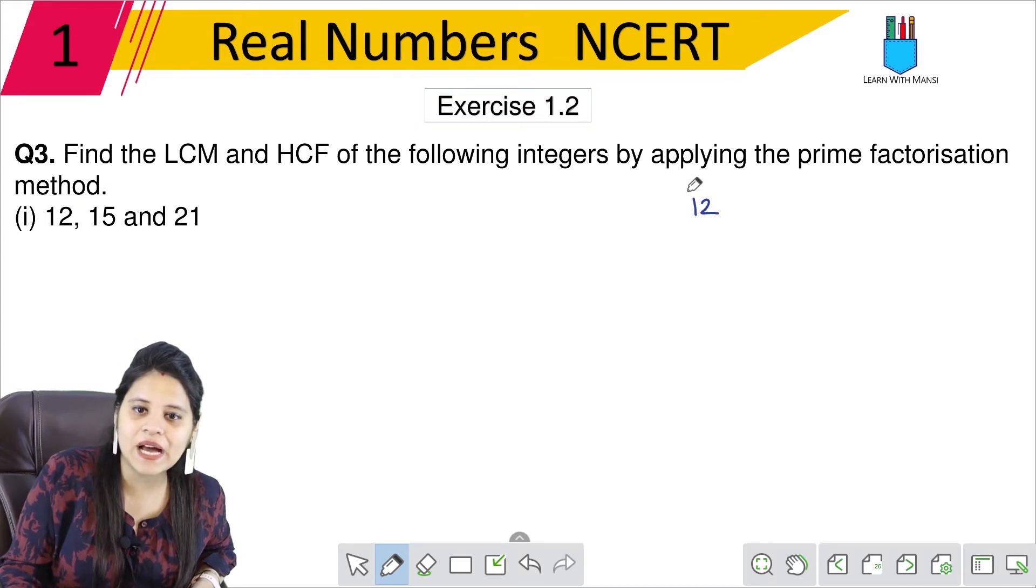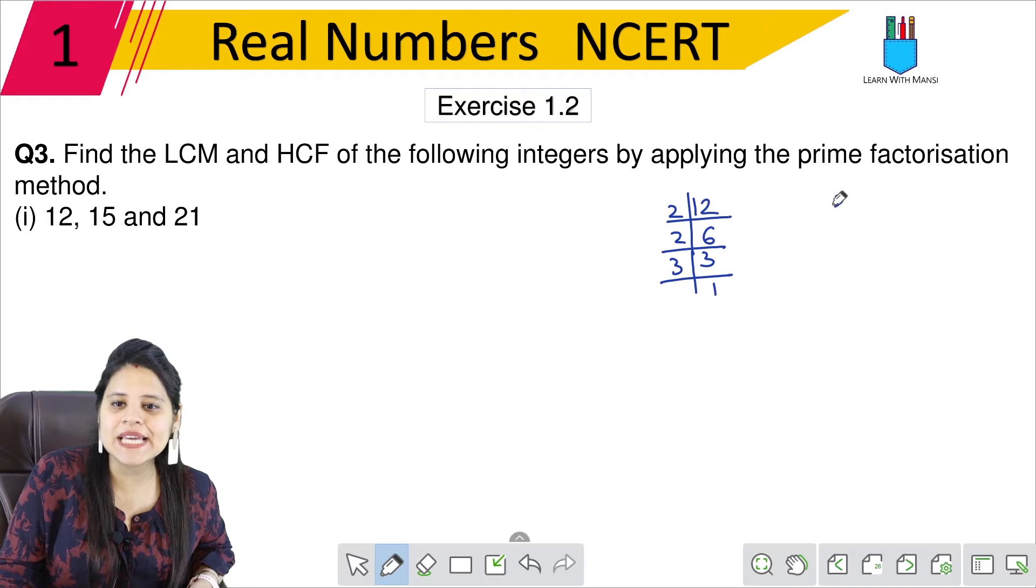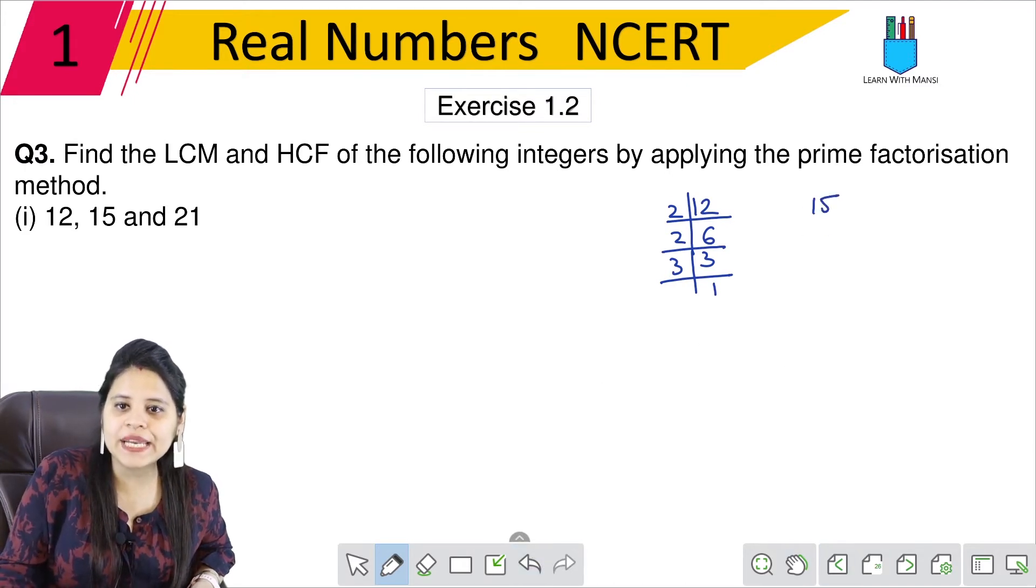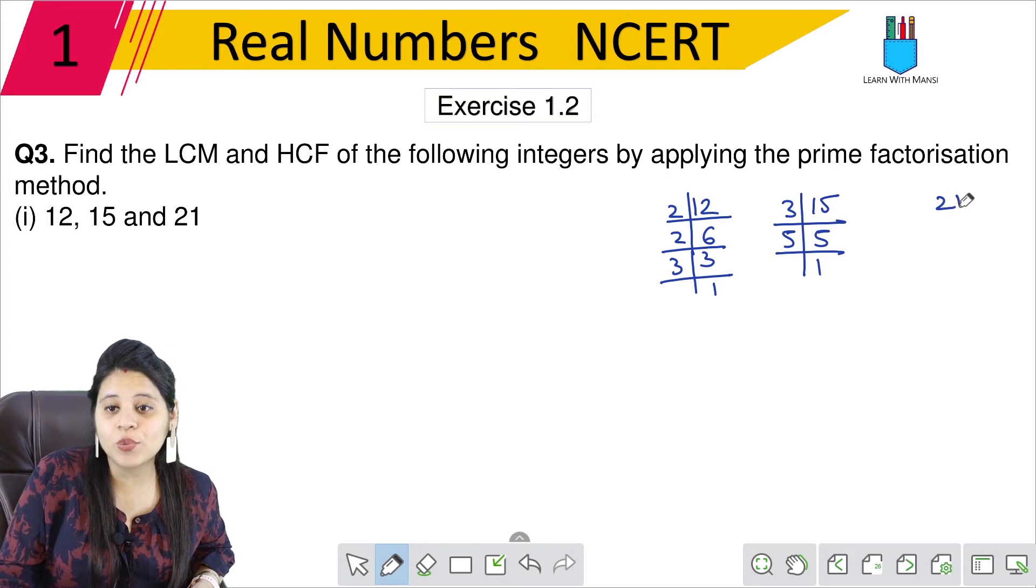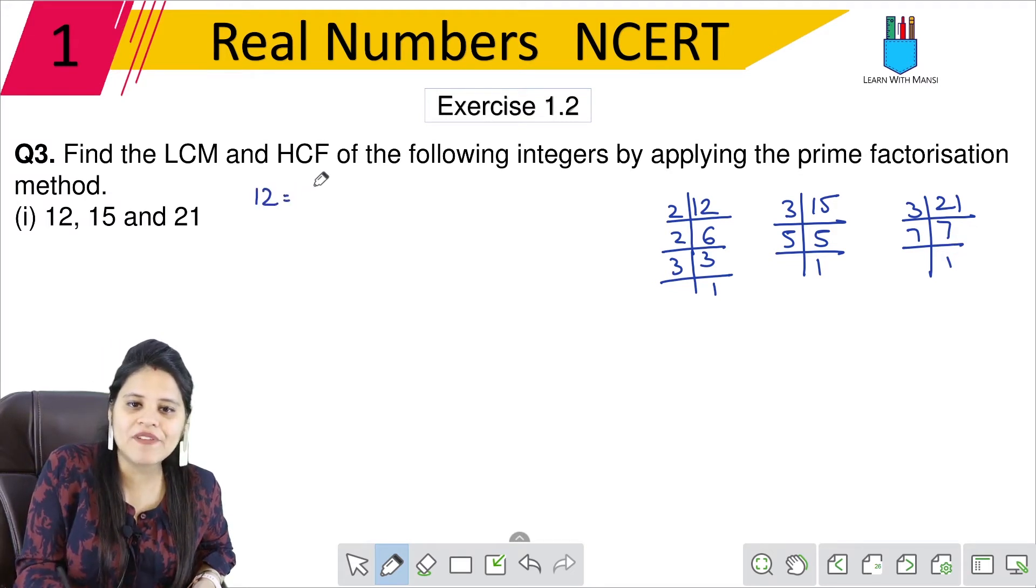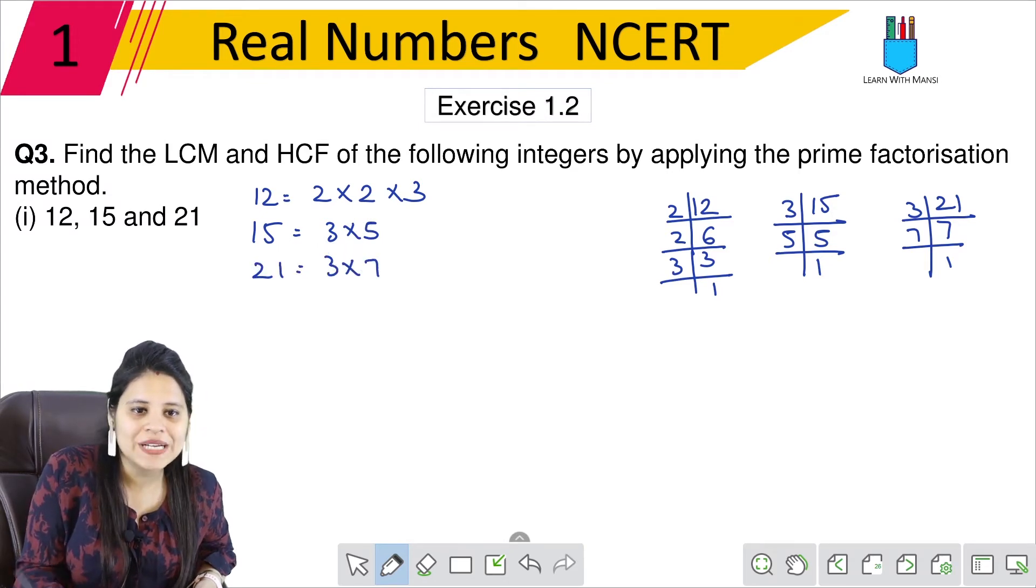So we will begin. First, take 12: 2, 6, 2, 3, 3, and 1. Next is 15. We can do it from 3, then from 5, then 1. Then 21, we will do it from 3, 7, 1. Now let's write these factors.